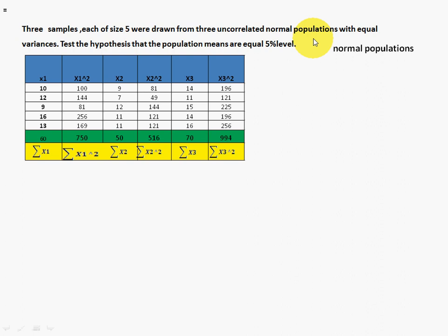The populations are normal populations, as already given in the problem. Equal variances are also already given in the problem. So our assumptions — normal population and equal variances — are satisfied.